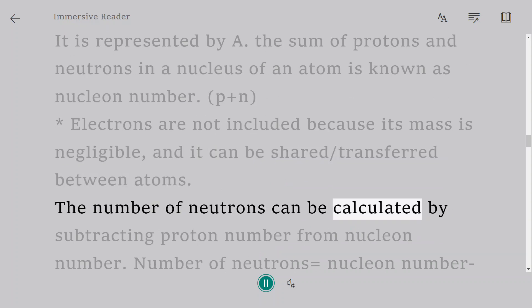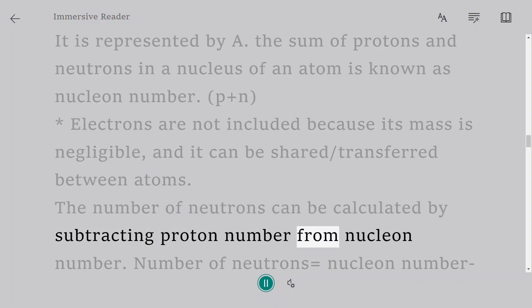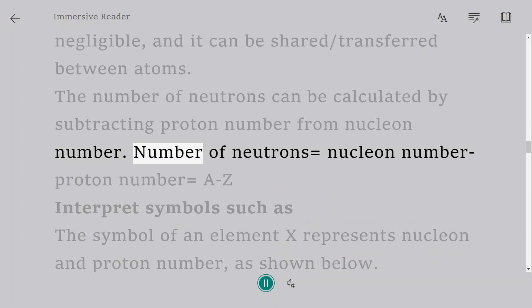The number of neutrons can be calculated by subtracting proton number from nucleon number. Number of neutrons equals nucleon number minus proton number, equals A minus Z.